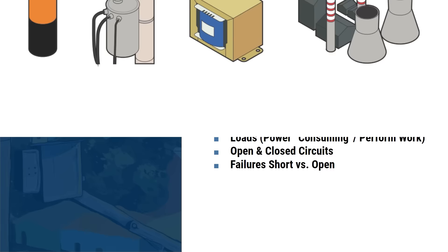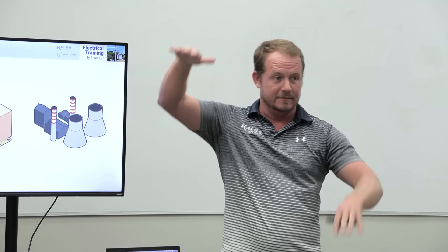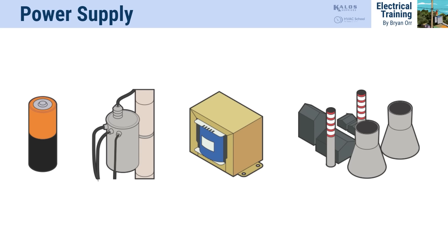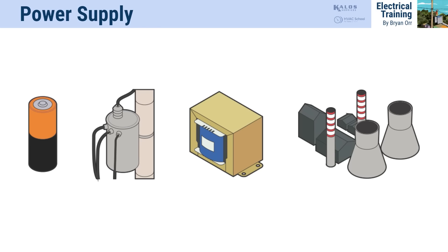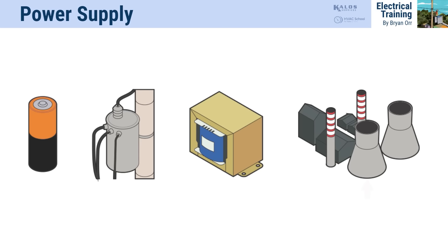Now let's talk about the basic electrical circuit. We've got different power supplies. An electrical circuit needs a power supply. A battery is a storage device—eventually it tends towards equilibrium and its voltage decays to zero. You have a transformer outside your house—that's the power supply for that structure. We also use a transformer in an air conditioning system for the 24-volt circuit—that's the power supply for the low-voltage circuit. And then there's the power company, which I show here as a nuclear power plant.